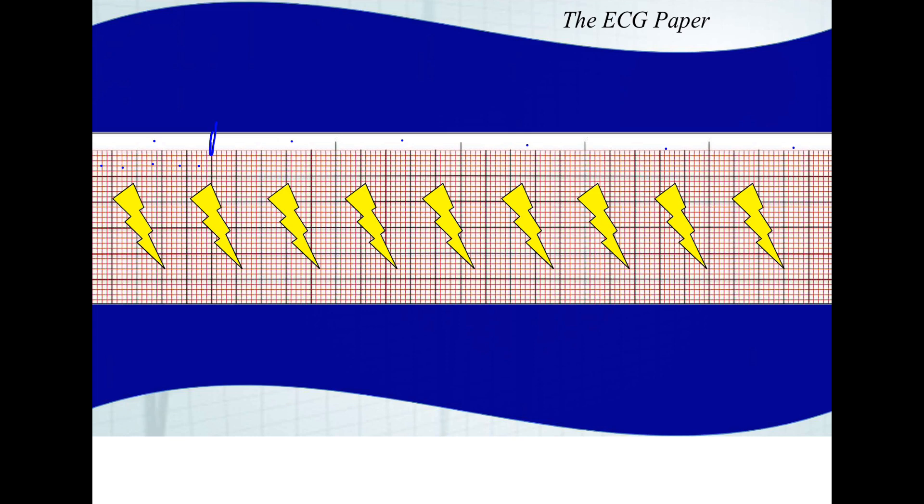Just looking at these lightning bolts, let's say that's ventricular depolarization. Each lightning bolt is a heartbeat. We have one, two, three, four, five, six, seven, eight, nine lightning bolts on this six-second strip. You take that number, multiply it by 10, and that is your heart rate. We have a heart rate of 90.